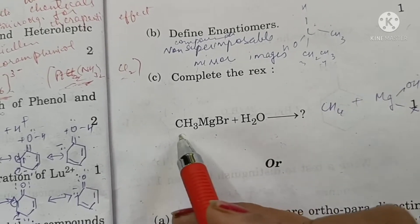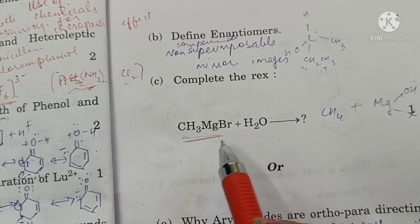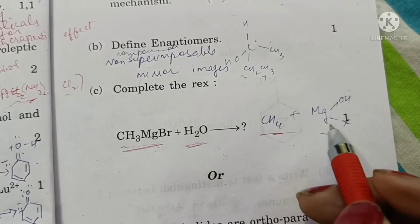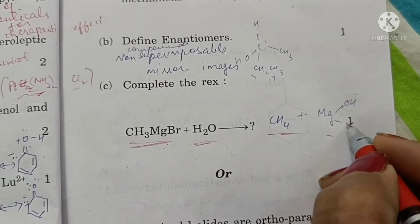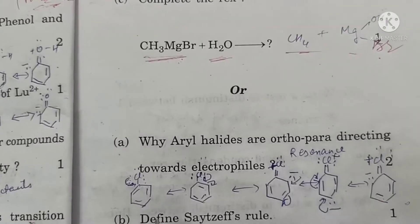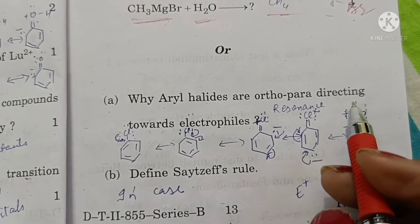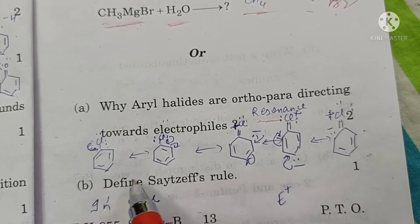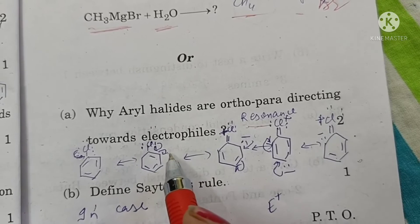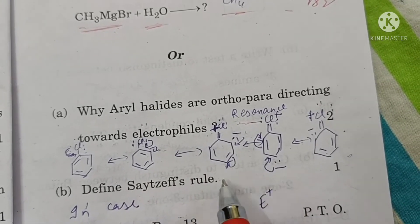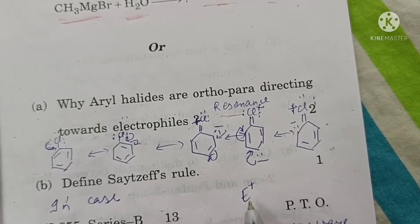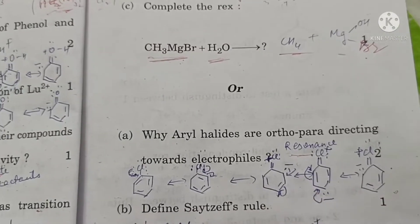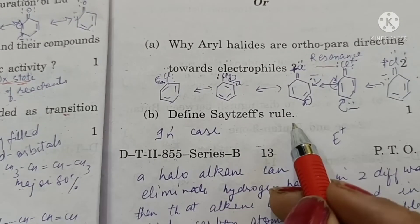Complete the reaction. This is very reactive Grignard reagent. It can react with water in any condition to form methane and magnesium hydroxybromide. Why aryl halides are ortho-para directing in nature? It is because of resonance. Because of resonance, the electrons move towards the ring and form negative charge either on ortho position or on para or again on ortho position. So the positively charged electrophile gets attached towards either ortho or para position. So they are ortho-para directing in nature.